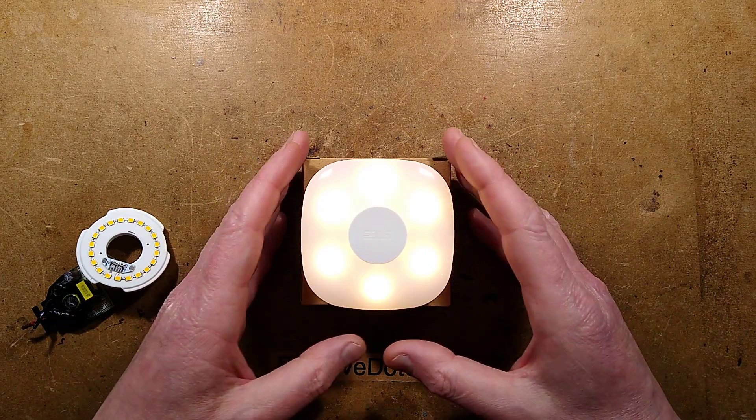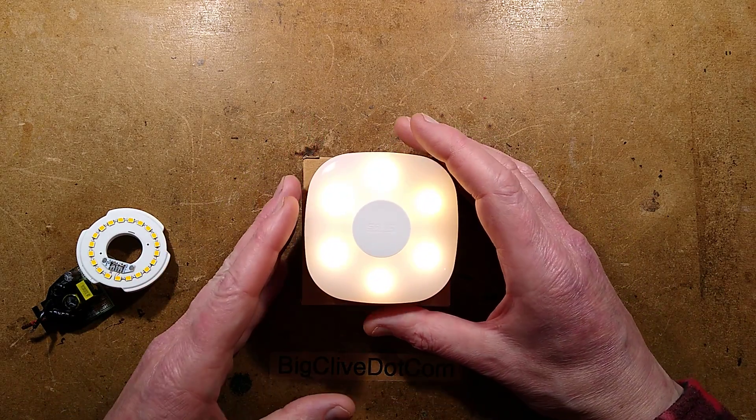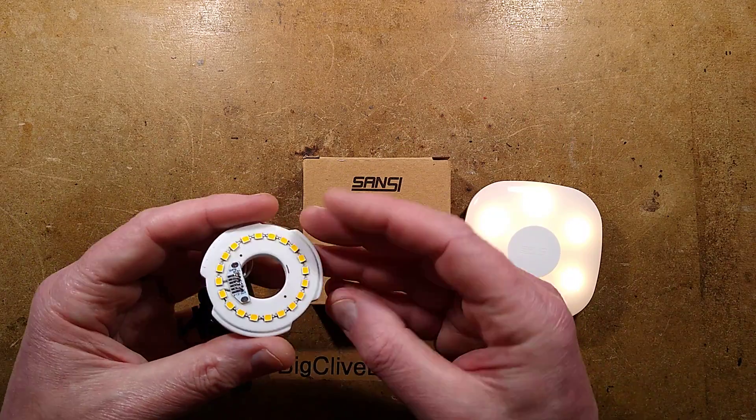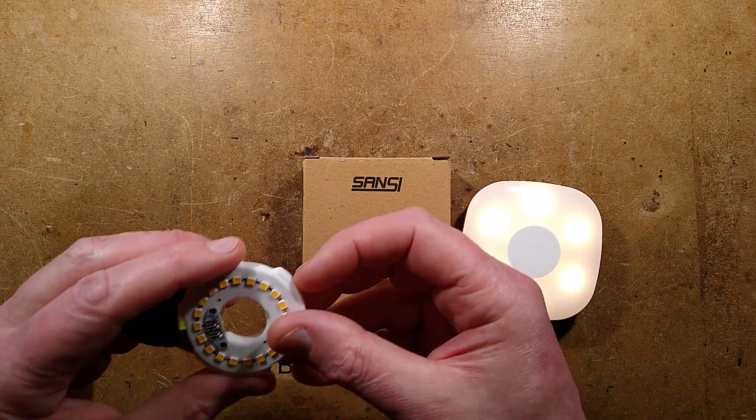Let's take a look at an interesting PIR sensor infrared light made by Sansei. Sansei is the same brand that I looked at recently who make the unusual ceramic core LED lights.